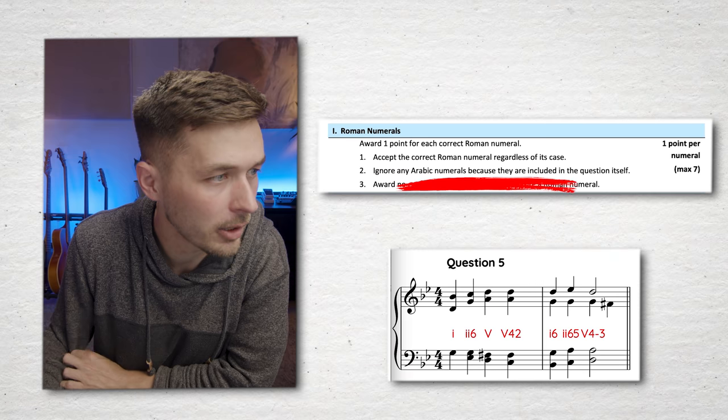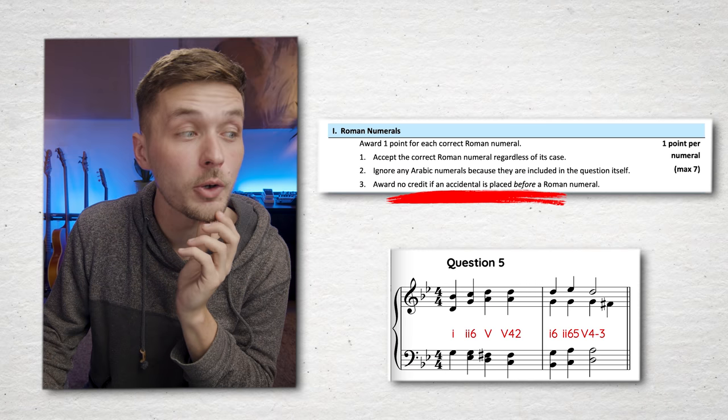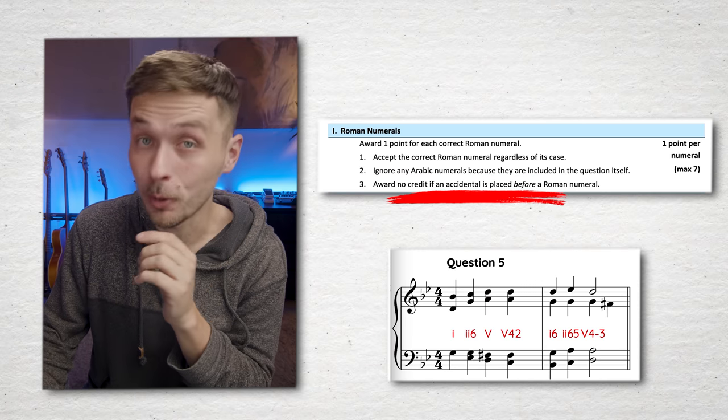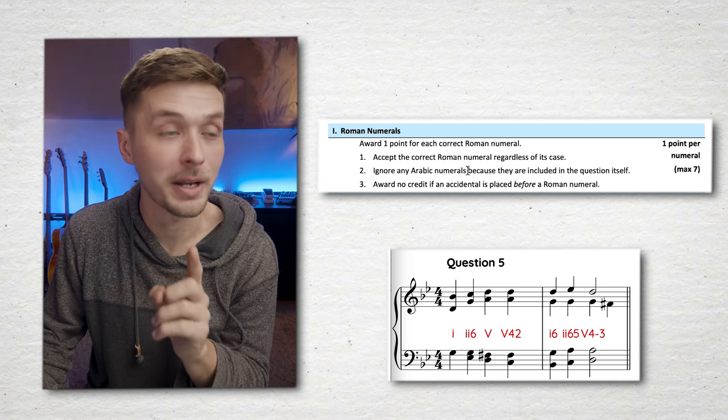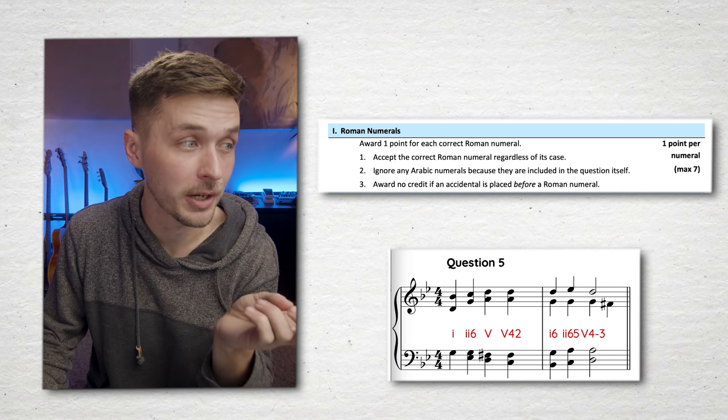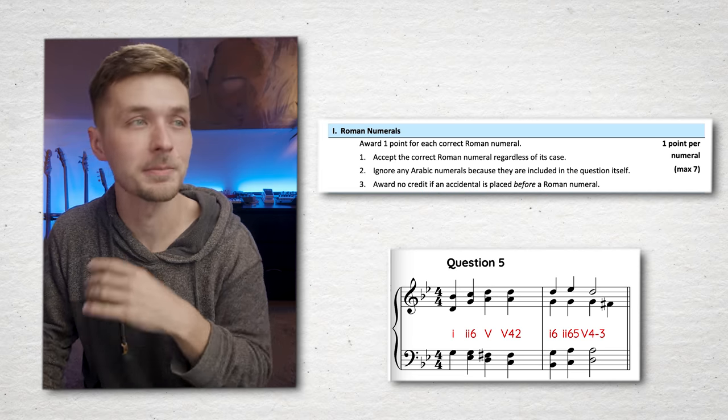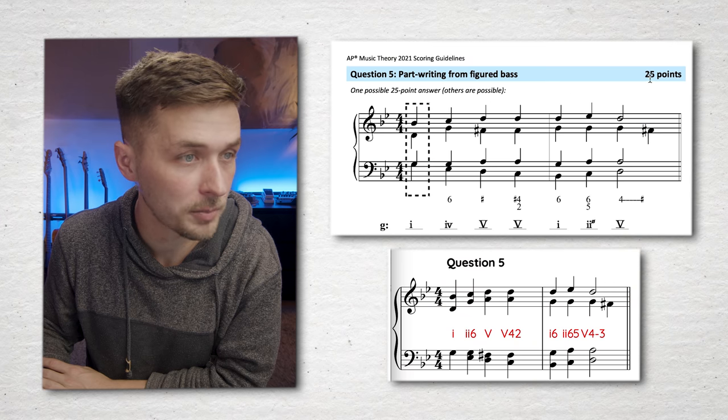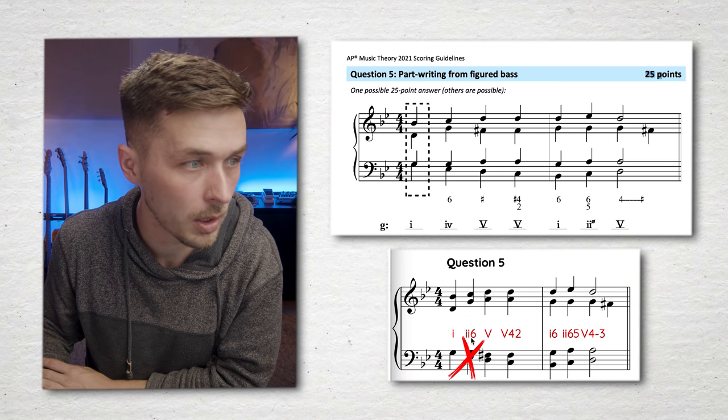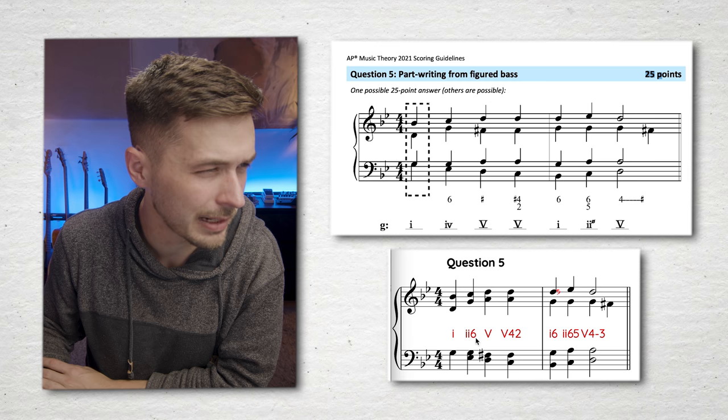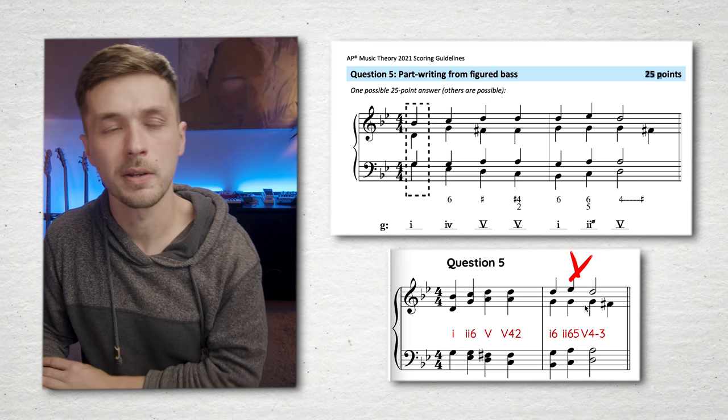Ignore any Arabic numerals because they're included in the question itself. Award no credit if an accidental is placed before a Roman numeral. That's very interesting. That's a jazz way of writing Roman numeral analysis of chord progression. So you don't get credit for this if you use the jazz system. It must be the 18th century system. Like for example, a sharp four chord or a flat seven chord, that kind of thing. You wouldn't get credit. You'd be musicking wrong. So I'm going to take a point or two off because of this. I got this chord wrong. I also kind of got this chord wrong. So I'll take two points off. Got 23 points on that one. Woo!